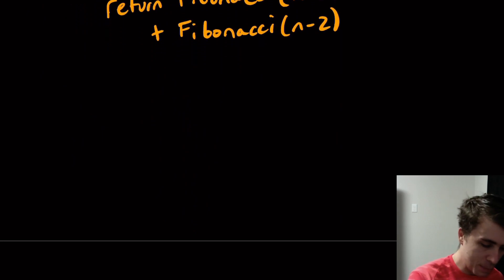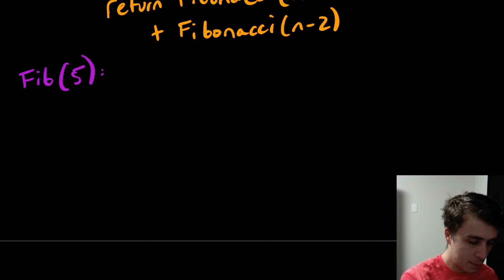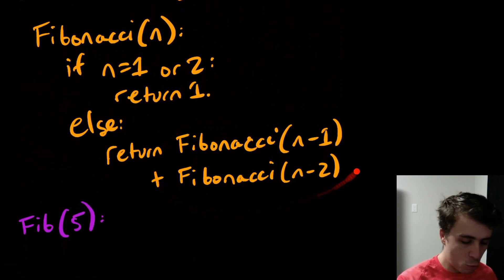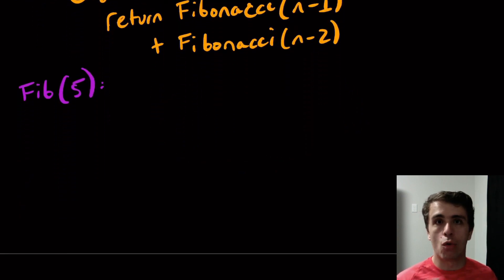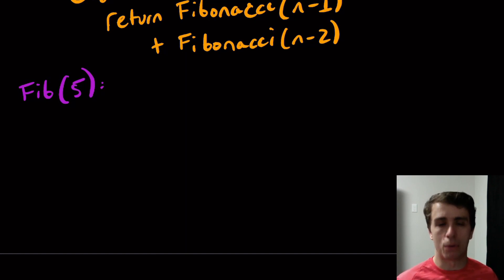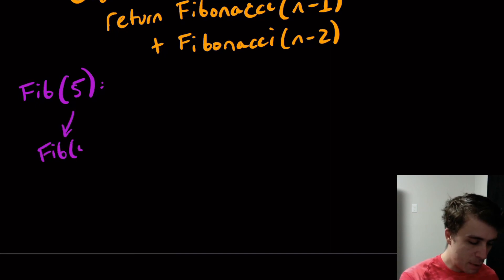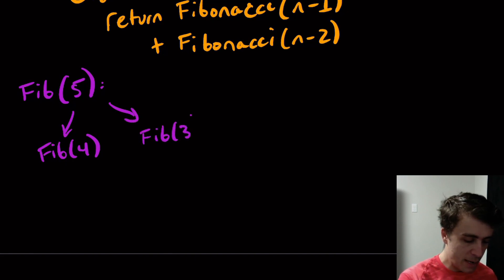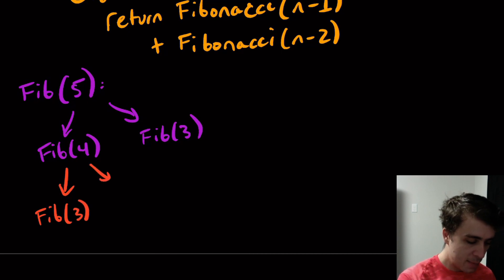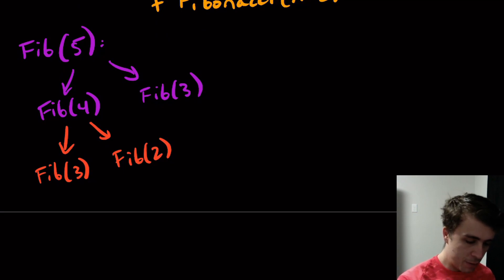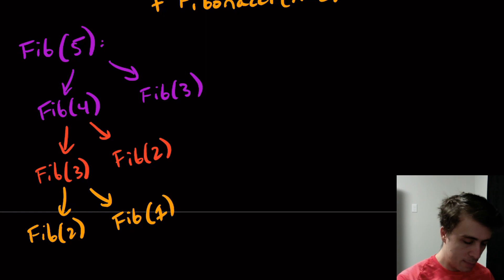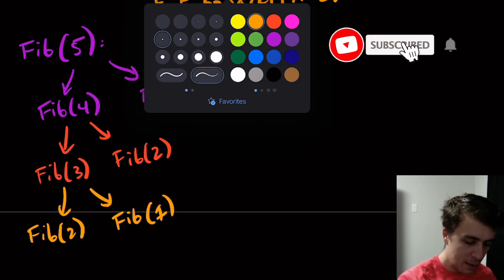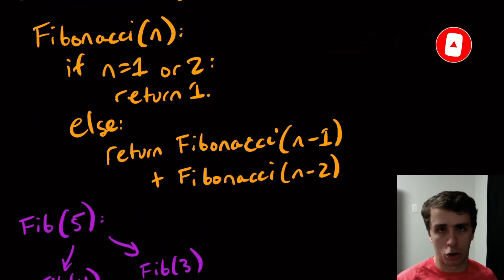Let me show you why with an example. Let's try to calculate fib(5). Based on this algorithm, we call two recursive cases. I'm going to draw out what the recursive calls are to show you why this algorithm is slow purely based on the number of calls made. fib(5) makes a call to fib(4) and fib(3). fib(4) makes a call to fib(3) and fib(2). fib(2) and fib(1) are at the end of the line because the base case says if n is 1 or 2, no more recursive calls.